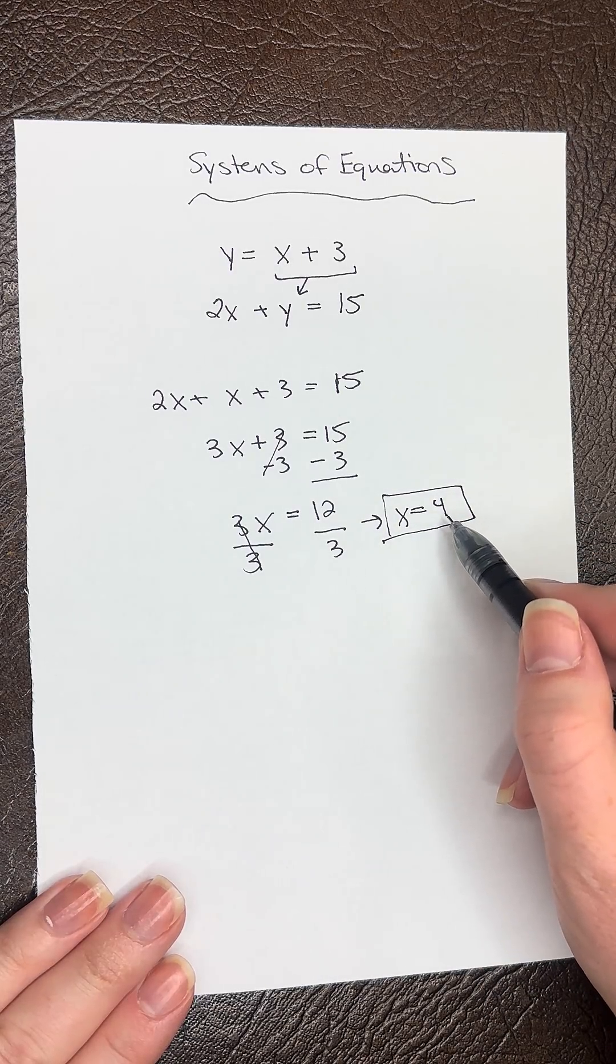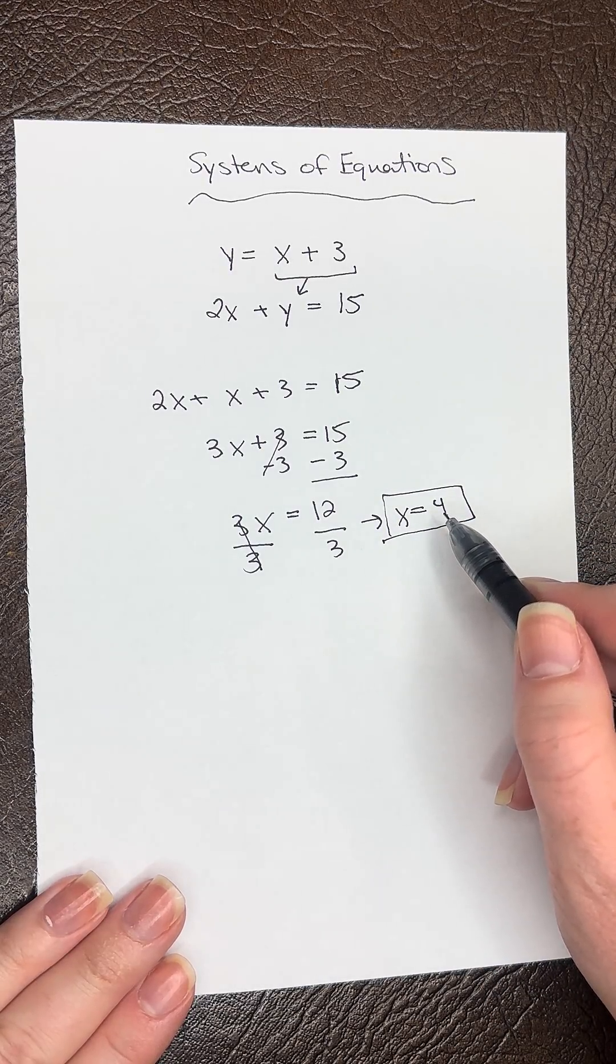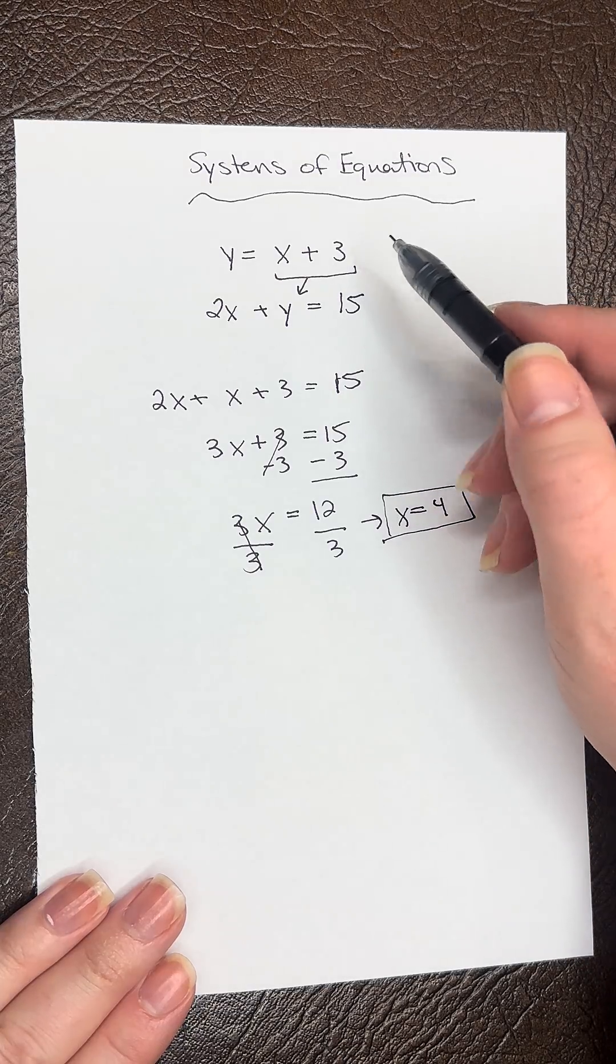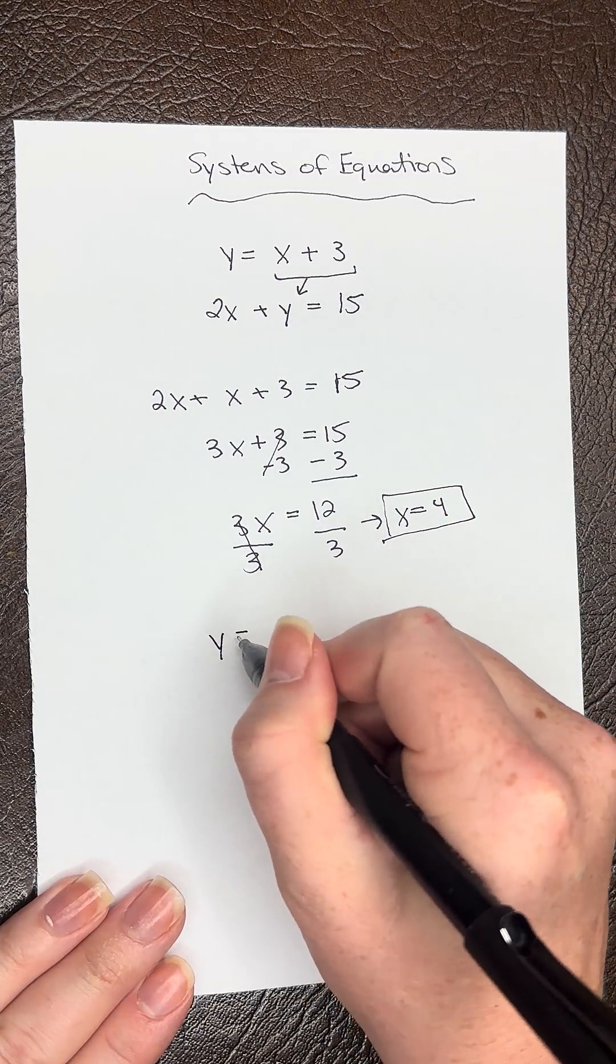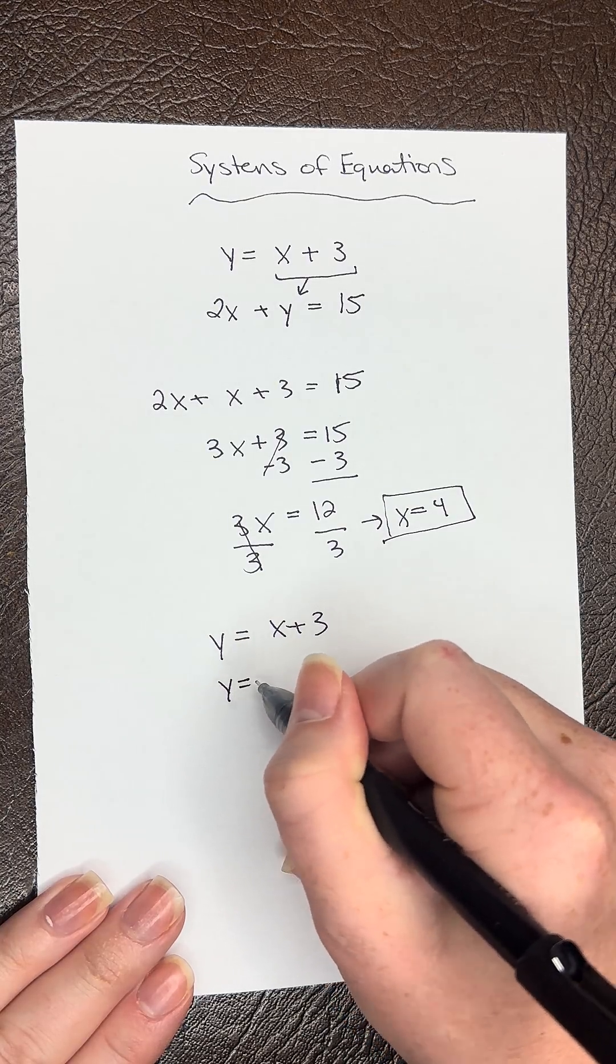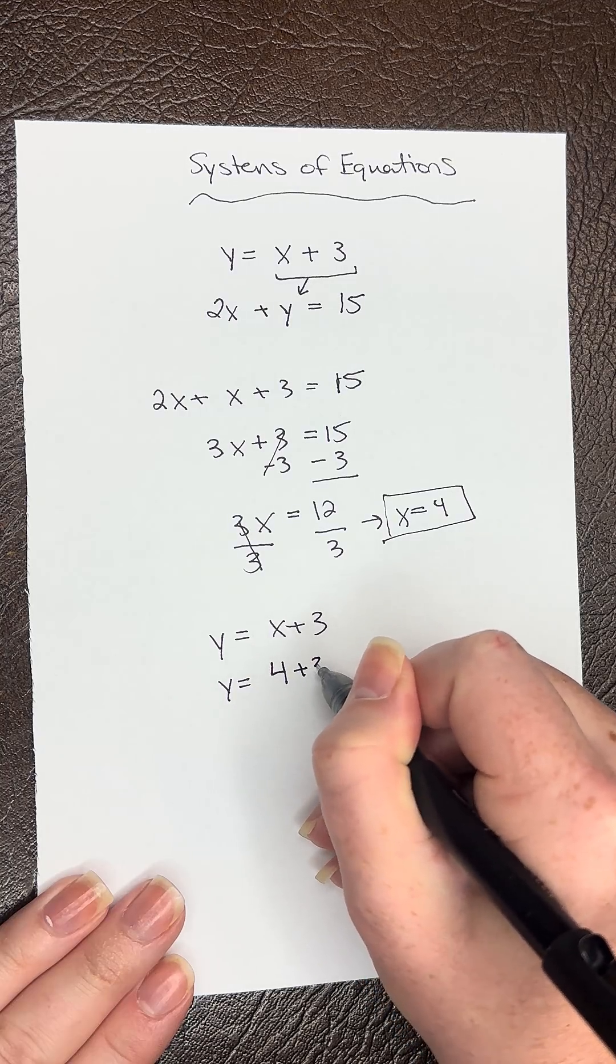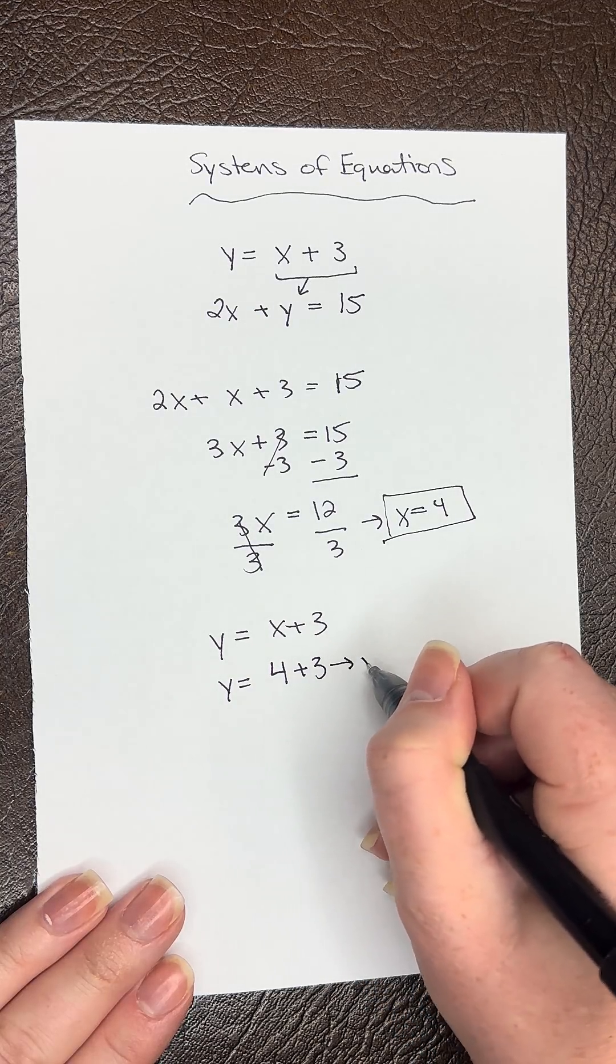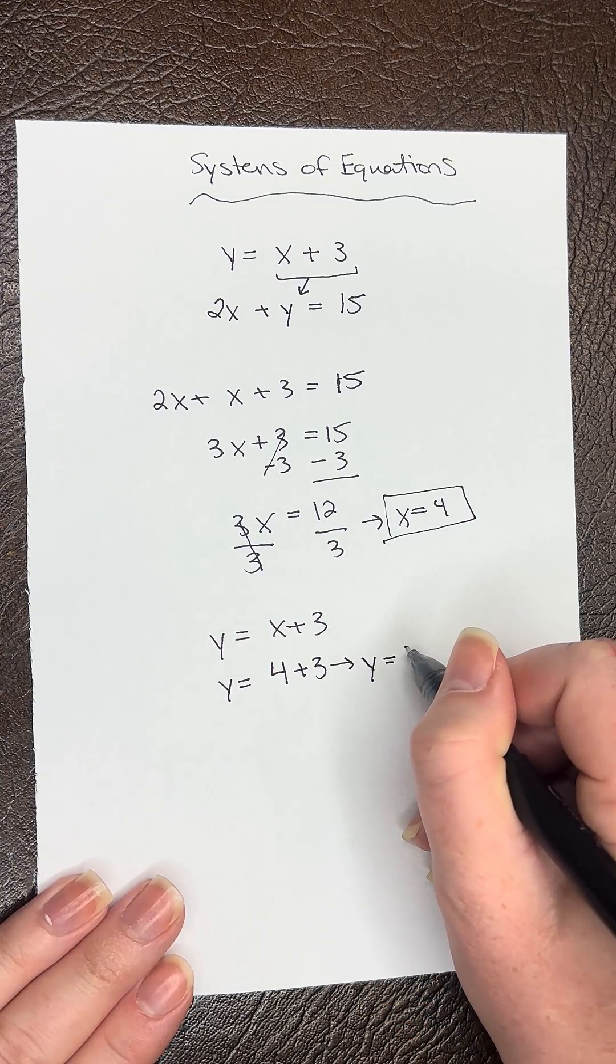Now we need to plug this x value back into one of the equations to solve for y. Let's plug into this first equation. So we have y equals x plus 3, and then we're plugging in 4 for x. So y equals 4 plus 3, and then y equals 7.